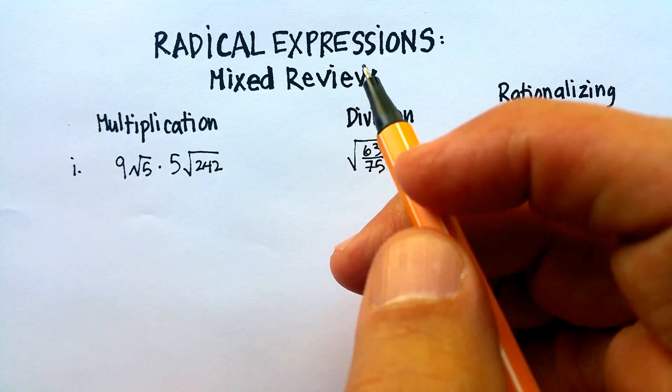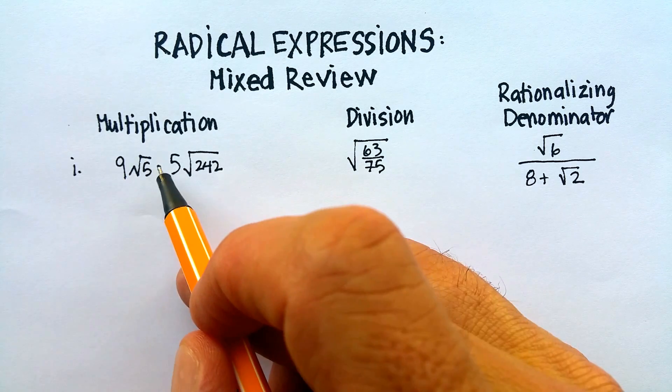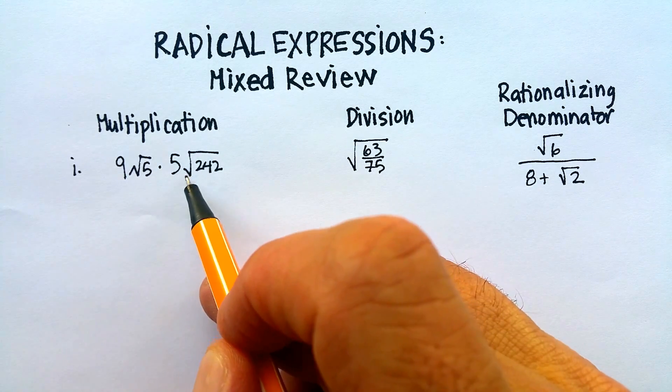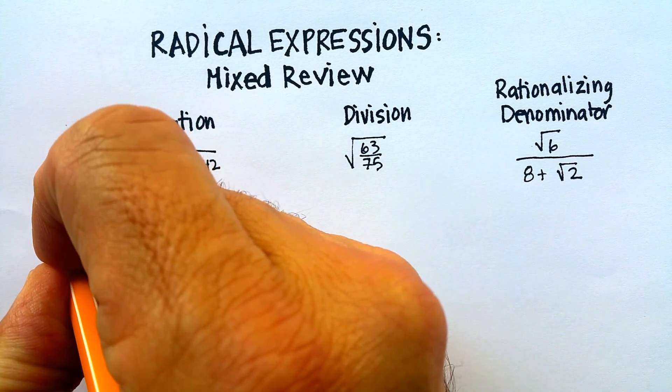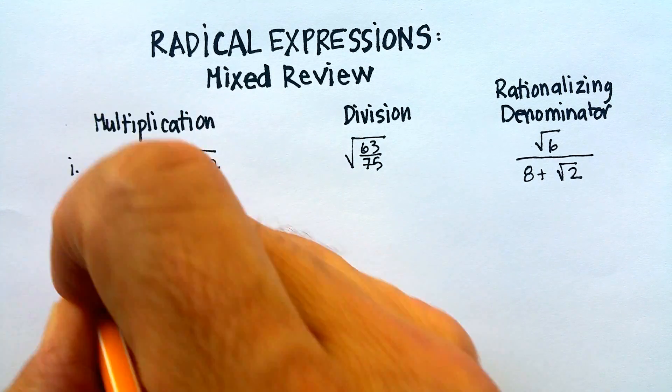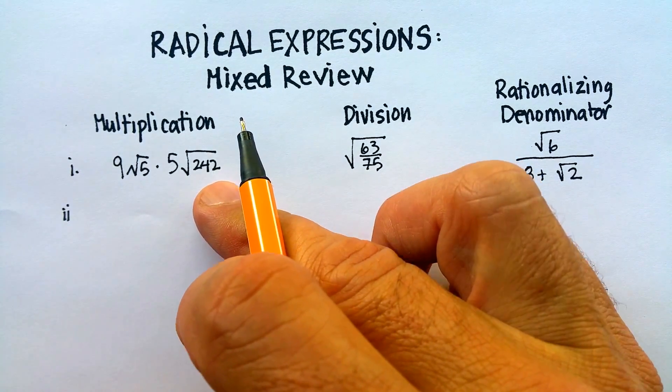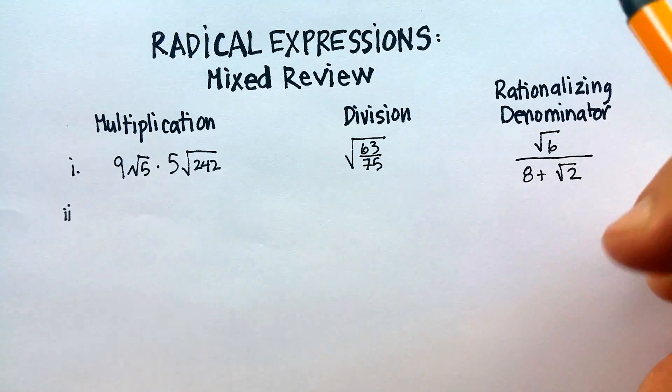Let's take a quick look at this one. We're going to multiply 9 radical 5 times 5 radical 242. Now, I usually like to tell my students, I want you to just notice what you see first. Don't just dive right in, but notice what you see.